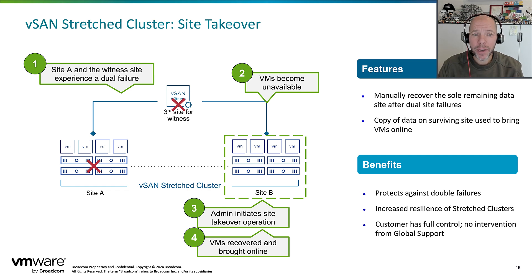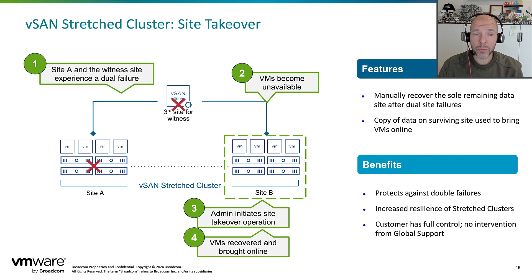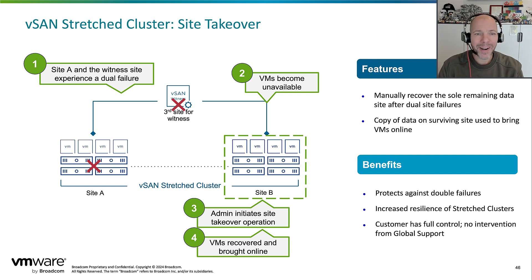At this point in time, if you end up in that scenario, there's only one way to get yourself out of it unfortunately, and that is phoning up global support — VMware support or Broadcom support — and then having them manually make changes to the environment for every single virtual machine individually so you can recover those VMs. So what we are actually planning is a new function that, if two out of the three sites go down at the exact same time, you can still recover from that.